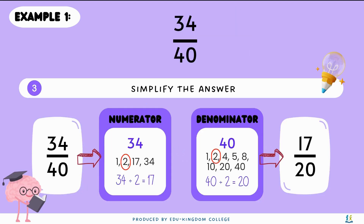The last step is to simplify the answer. In the last video we learned about how to simplify fractions. With that method in mind, we find the highest common factor, which is two in this case, and then divide the numerator and denominator by it: thirty-four divided by two gives seventeen, and forty divided by two gives twenty. Putting the fraction back together gives us seventeen over twenty.